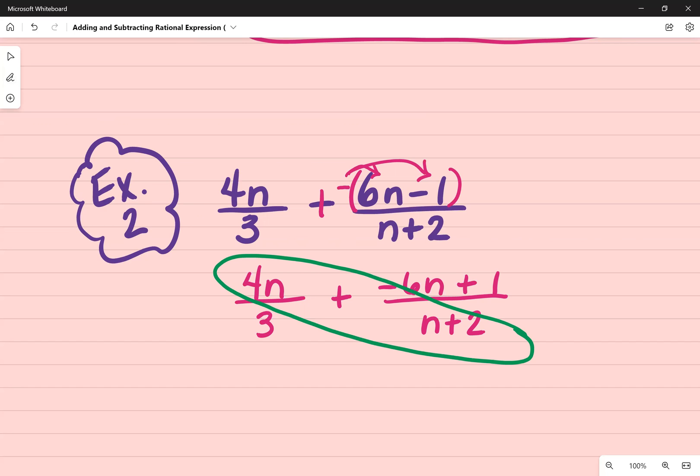And I end up with 4n squared plus 8n. If you want to know where that came from, that's taking 4n, which is on the top, and multiplying it times the quantity of n plus 2.